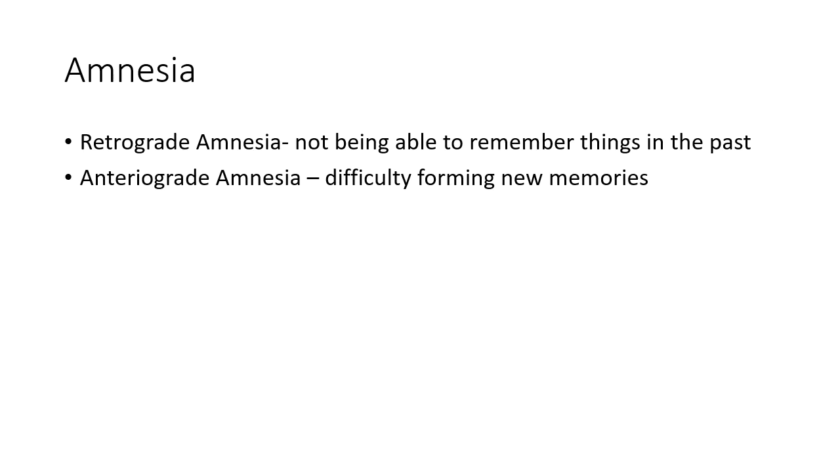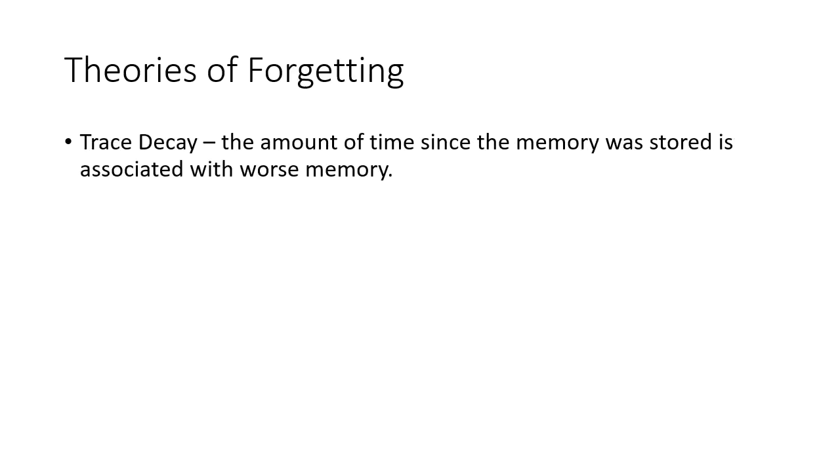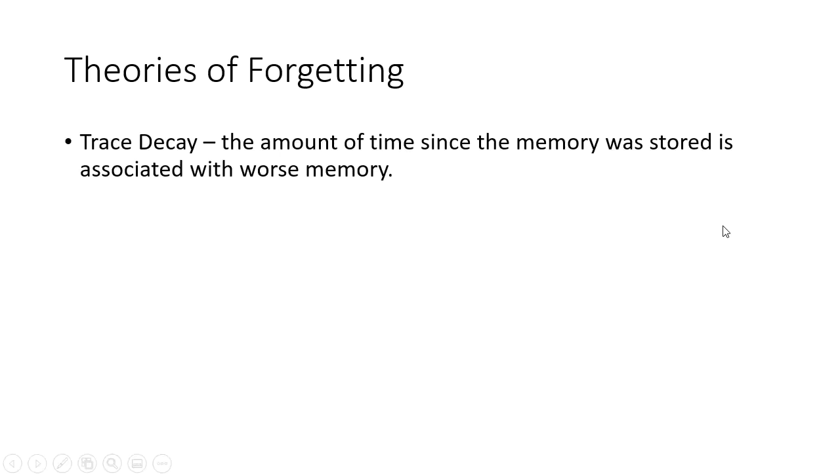There are some theories of forgetting. The first one is the trace decay theory, which basically means that the longer it's been since a memory was stored, the more likely you are to forget it. That does explain why you don't have any memory for what happened when you were really young, but it doesn't account for the fact that I don't remember what I did yesterday, yet I do remember what happened when the Twin Towers fell.